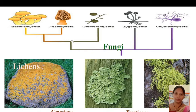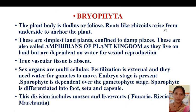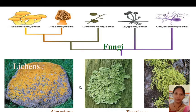Here is the classification of fungi, which we will know in detail later. The outline includes Basidiomycotina, Ascomycotina, Glomeromycotina, Zygomycotina, and Chytridiomycotina. Here are some examples of lichens: this is a crustose lichen and these two are fruticose lichens.